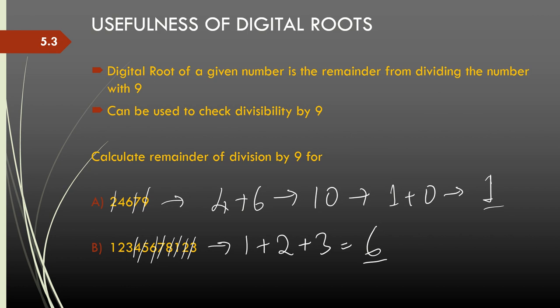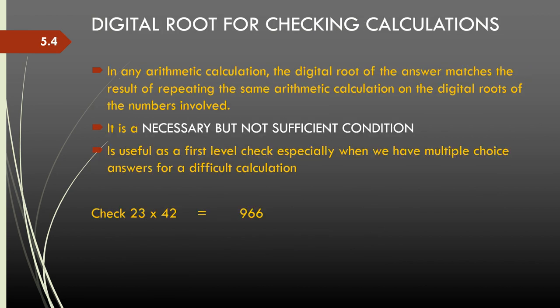For example, 5454 — 5 and 4 cancel out to 9, so 5454 is divisible by 9. That's how we can use digital roots for checking divisibility by 9.